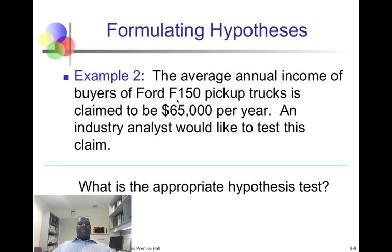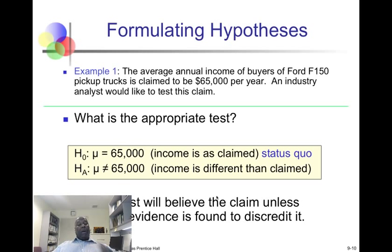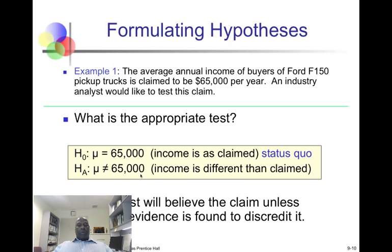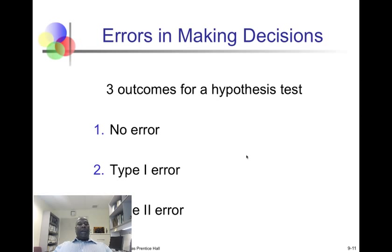Here's another example: the average annual income of buyers of the Ford F-150 pickup truck is claimed to be $65,000 per year. An industry analyst would like to test this claim. We assume that the income is $65,000, and then we look for evidence that it is not $65,000. We would set about trying to find evidence to support or reject that.